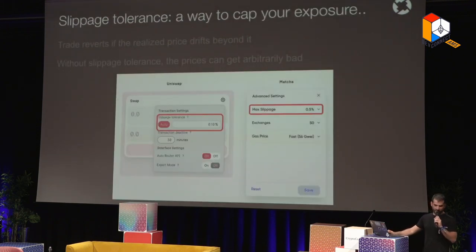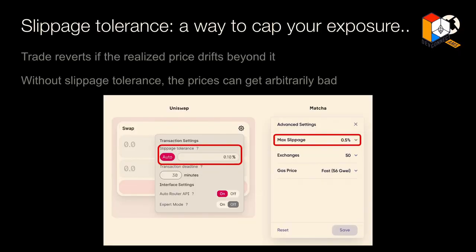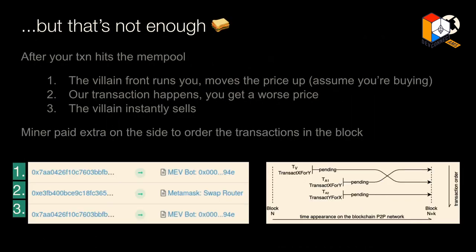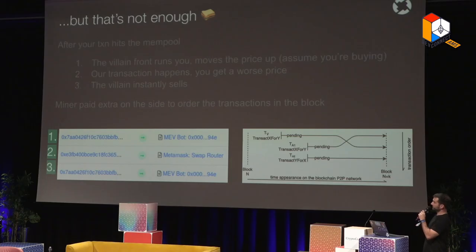Typically the way you protect yourself against slippage is by setting a slippage tolerance, usually hidden behind a settings menu. This introduces protections so that once your trade is submitted to the mempool, if the price drifts too much it reverts. However, slippage tolerance is not enough protection, because after your transaction hits the mempool there are attacks like sandwich attacks that can still exploit you.